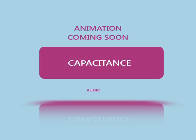The unit of capacitance is the farad, named after the English physicist Michael Faraday. A 1-farad capacitor, when charged with 1 coulomb of electrical charge, will have a potential difference of 1 volt between its plates.